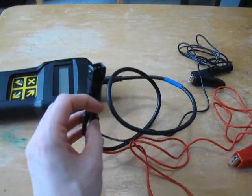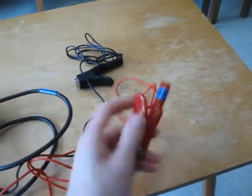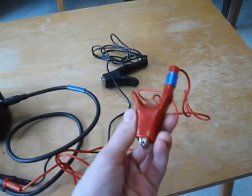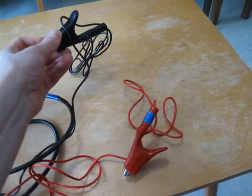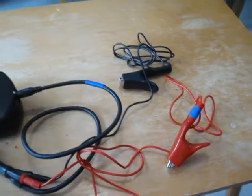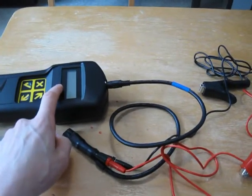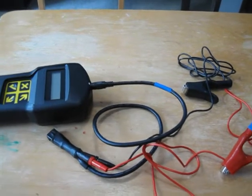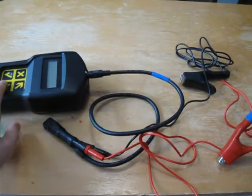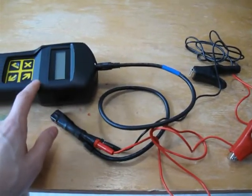This will get plugged into the 2-pin DLC connector on the car. This will get clipped onto battery positive. This will get plugged into battery negative. And then, once that's done, the machine should wake up and display something, and then you just go through the menus. Basically follow what the machine asks you to do.